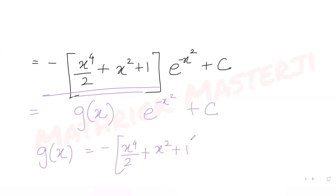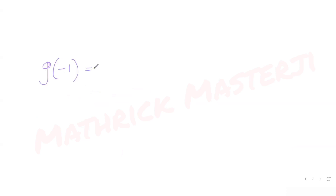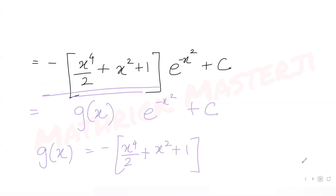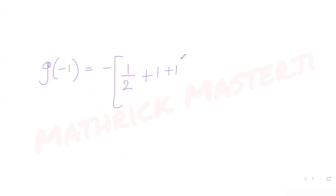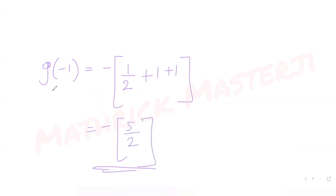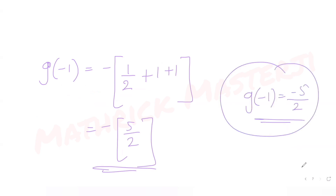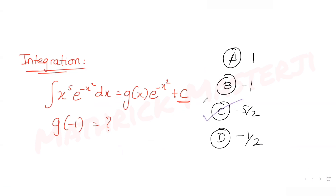To find g of minus 1, substitute x = minus 1: minus 1 raised to 4 is 1, so we get minus (1 over 2 plus 1 plus 1). That is minus (1 over 2 plus 2), which equals minus 5 over 2. This matches option C, so C is the correct answer.